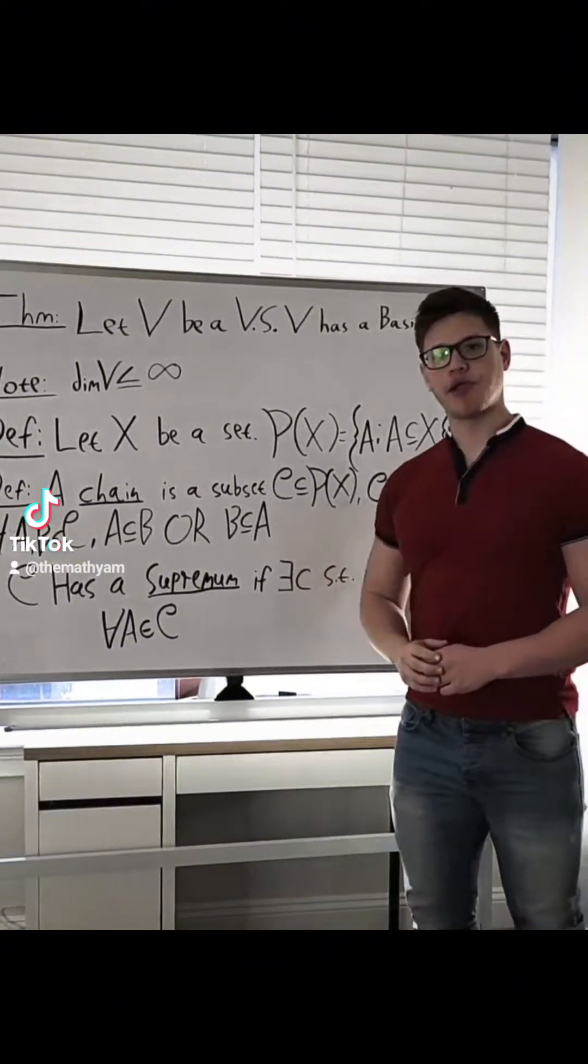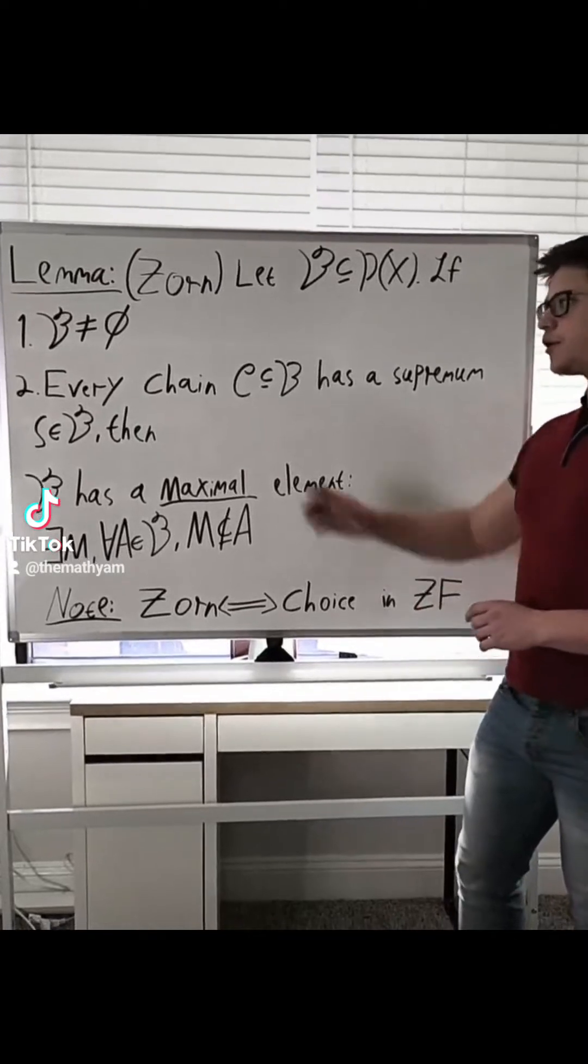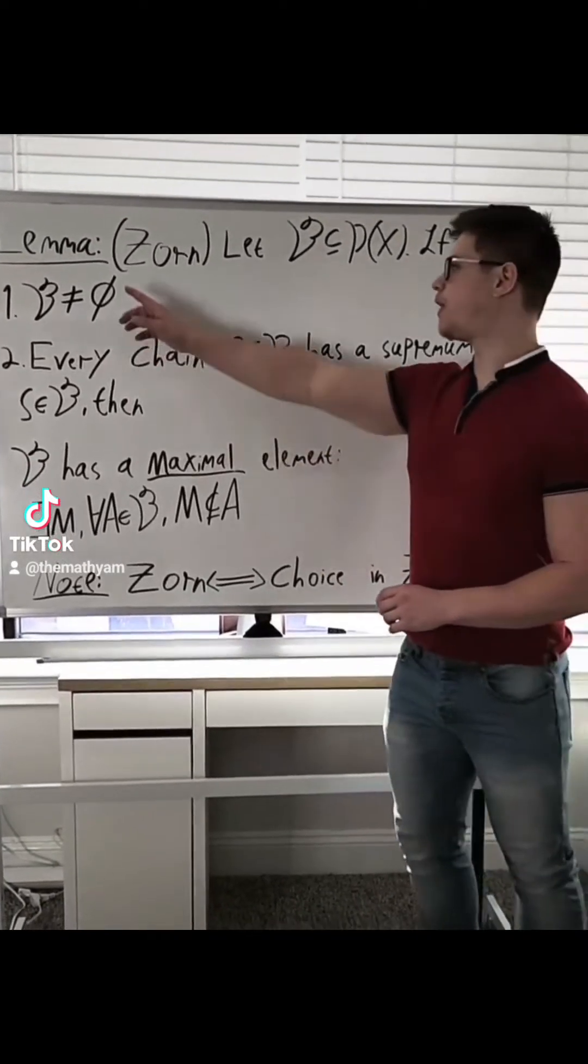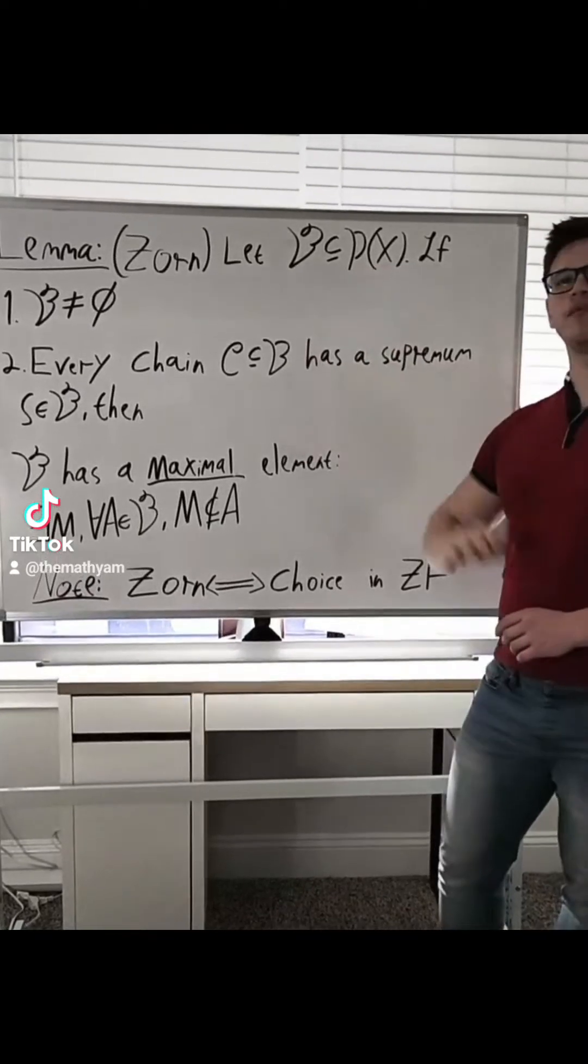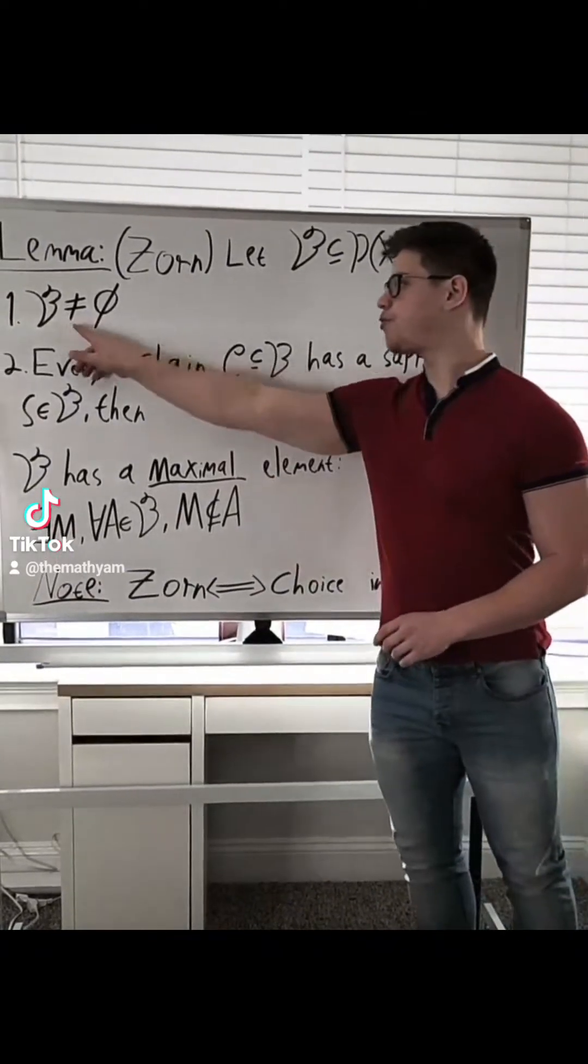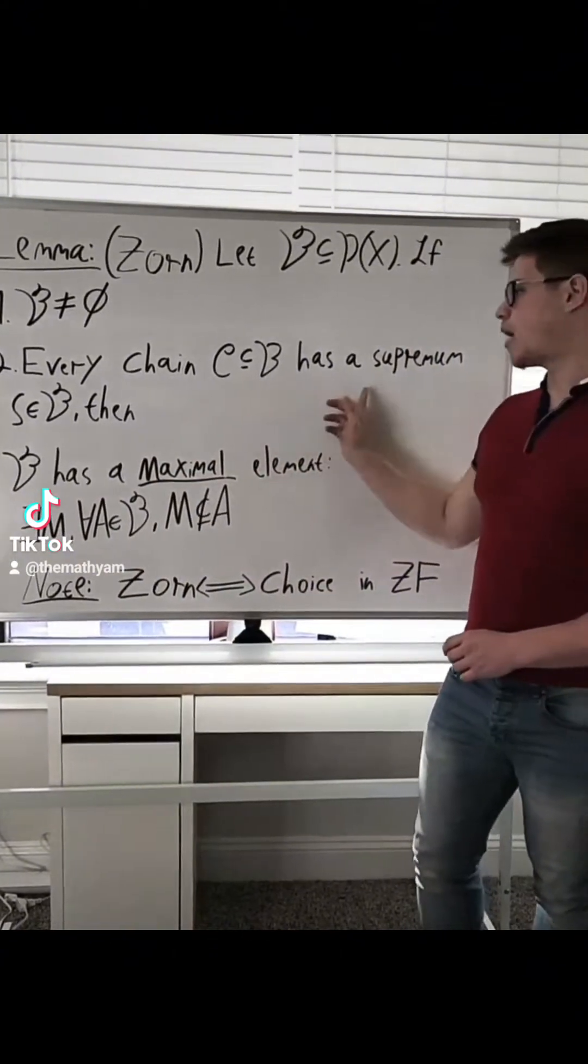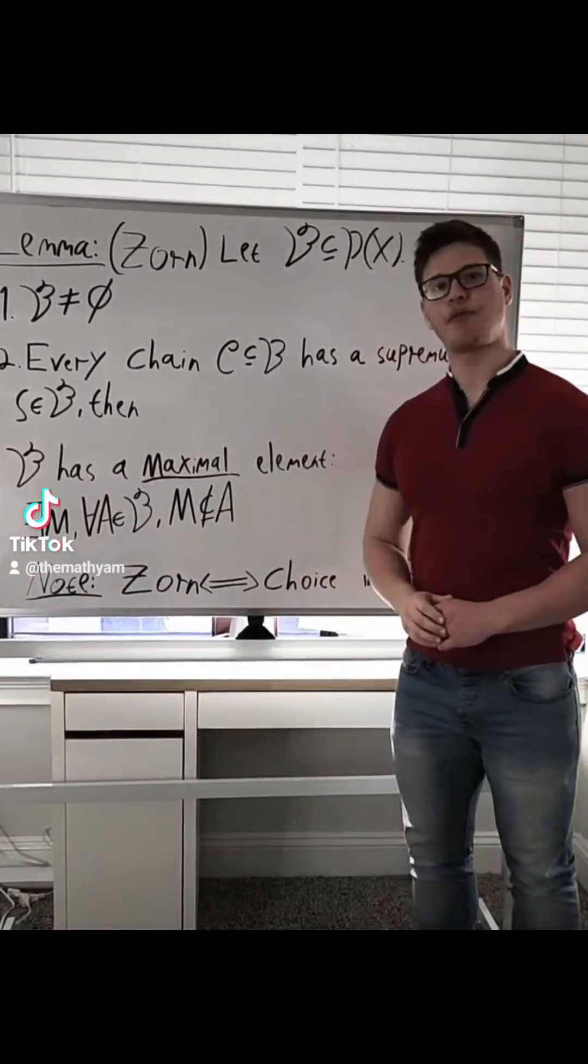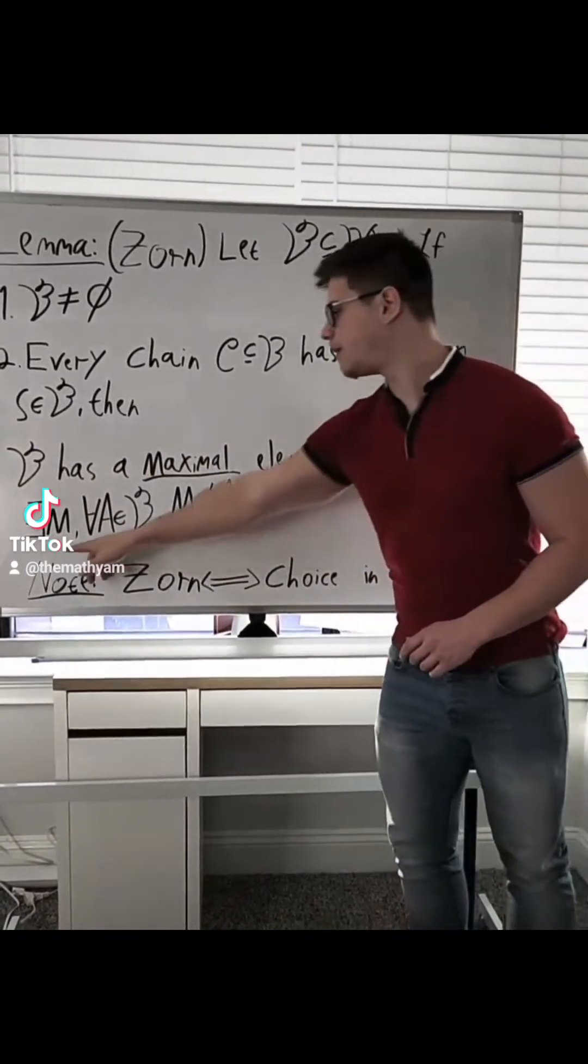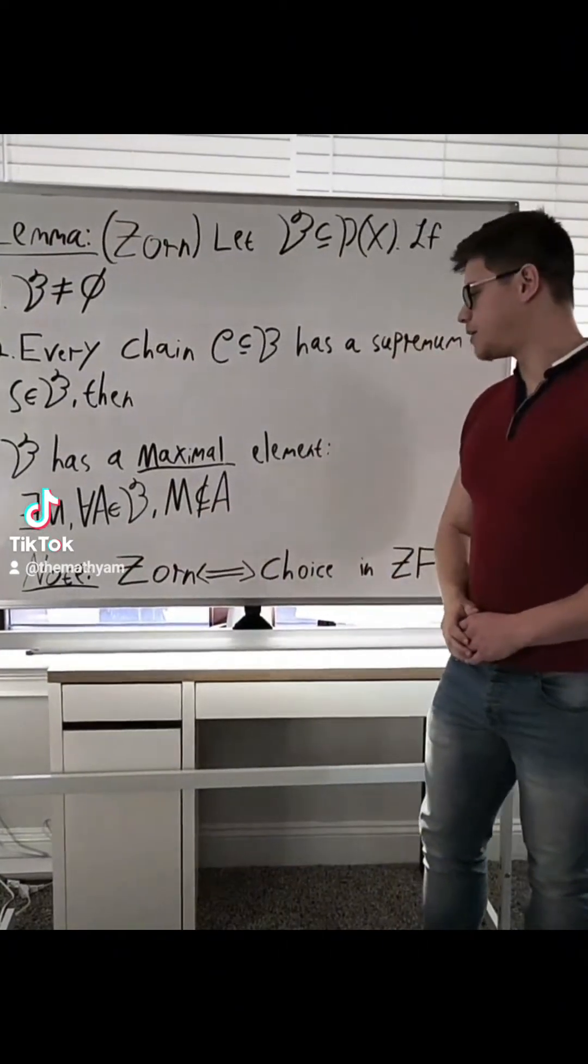So now we're ready to state Zorn's Lemma. The lemma says that if we have a subset B of the power set with the following two properties: B is non-empty and every chain C inside of B has a supremum which is also inside of B, then B has what's called a maximal element. That is, there is some element M that is not contained in any other element of B.